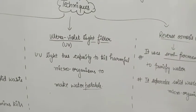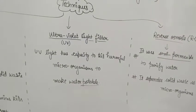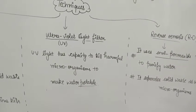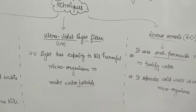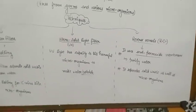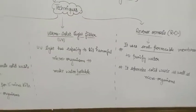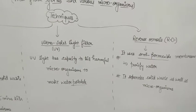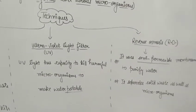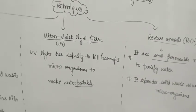The next technique is UV light filters. UV light is a kind of light that has the capacity to kill harmful microorganisms. In the market there are many filters available which use ultraviolet rays, similar to the UV rays from the sun that are trapped by the ozone layer. We artificially use UV light to kill microorganisms in water.